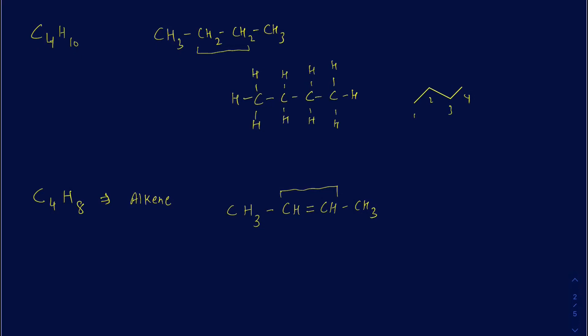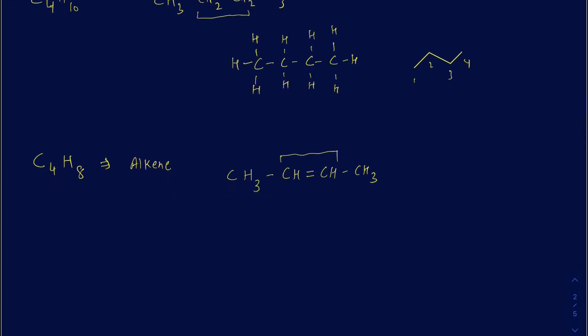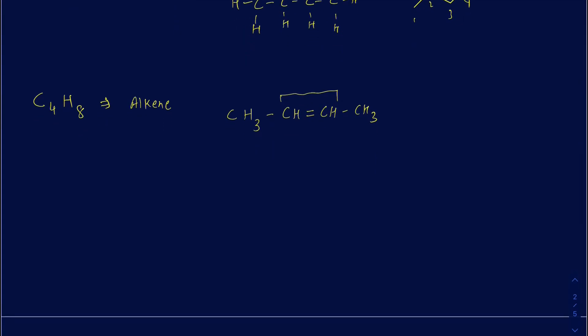In C4H10, the middle carbons have two hydrogens, but in C4H8 we placed a double bond between the middle carbons, so they will have one fewer hydrogen because they already have four bonds. In the expanded form, the first and last carbons have three hydrogens each, and the middle carbons have the double bond with one hydrogen on each, making up a total of four bonds.